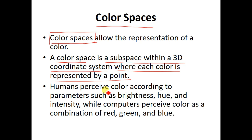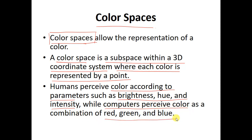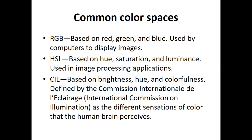Humans perceive color according to parameters such as brightness, hue, and intensity, while computers perceive color as a combination of red, green, and blue. These are the most commonly used color spaces — you have heard about RGB color spaces both inside and outside the class.